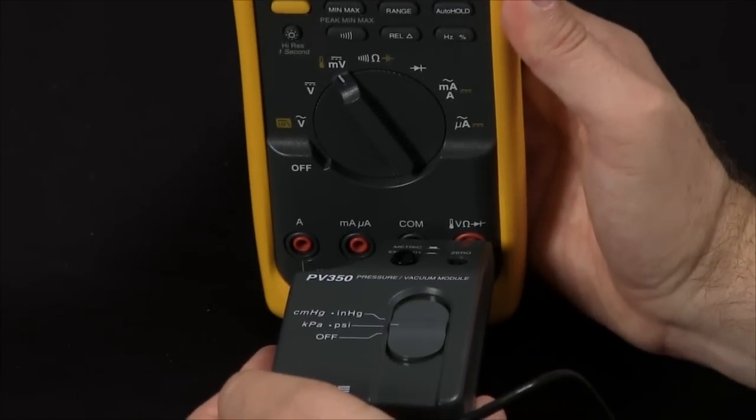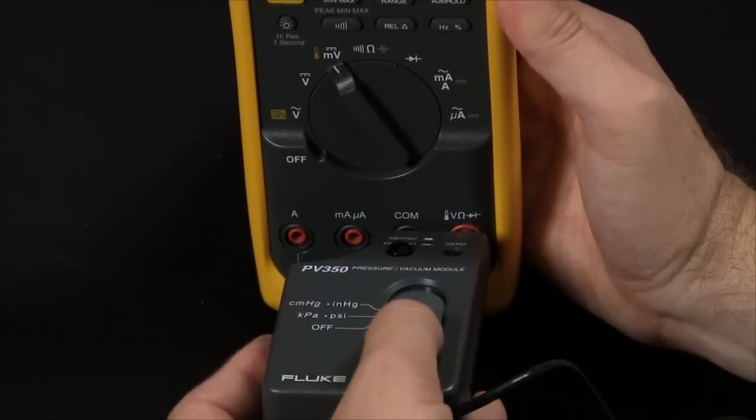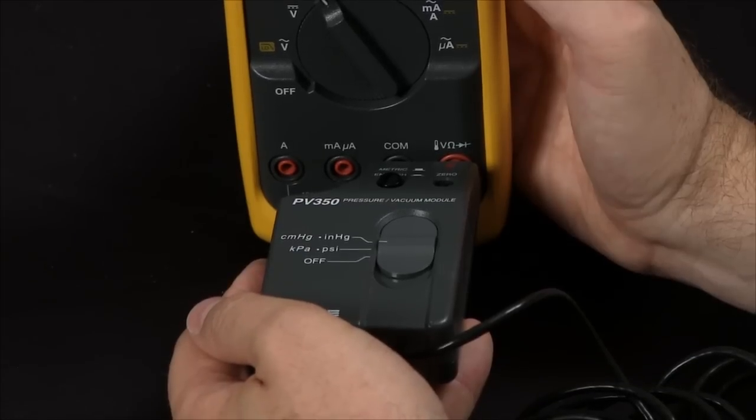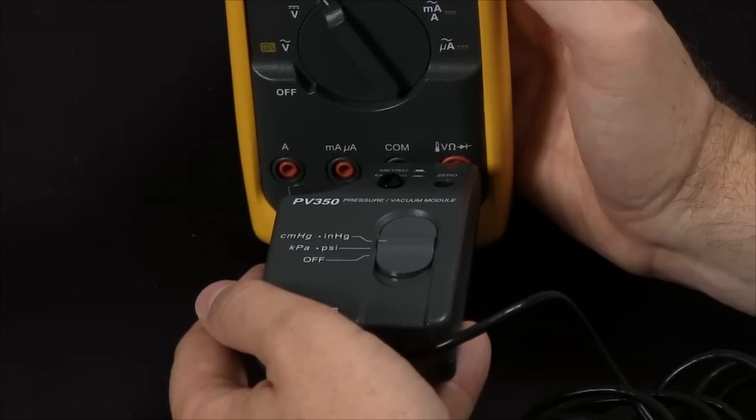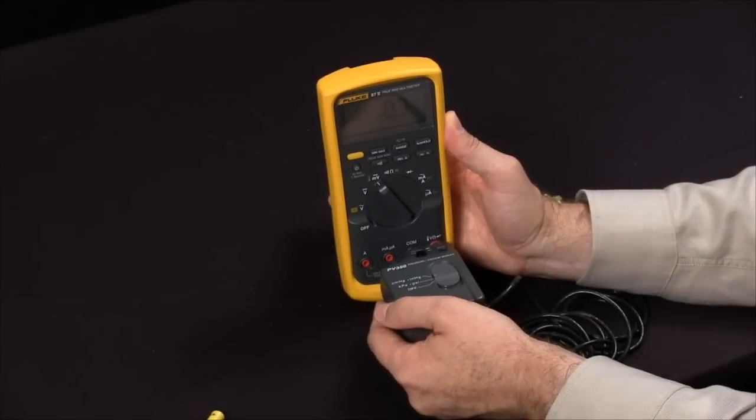To measure pressure, simply slide the switch to kilopascals or psi, and you would do the same to measure your vacuum, either in centimeters of mercury or inches of mercury.